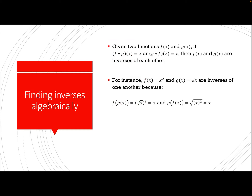Algebraically, two functions are inverses if when we do a composition of functions, either f of g of x or g of f of x equals x. The example we have here is that if f of x equals x squared and g of x equals the square root of x, those are inverse functions because f of g of x equals the square root of x squared, which is x. Or if you did g of f of x, you'd have the square root of x squared, which is still x. So if you get f of g of x equals x, that means the two functions are inverses of each other.